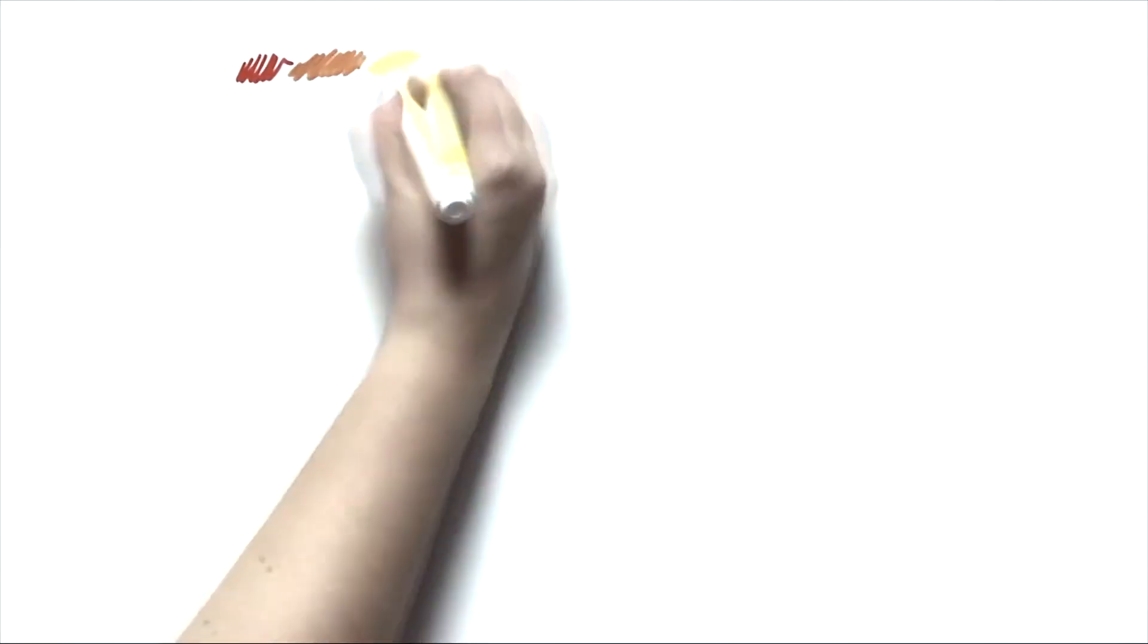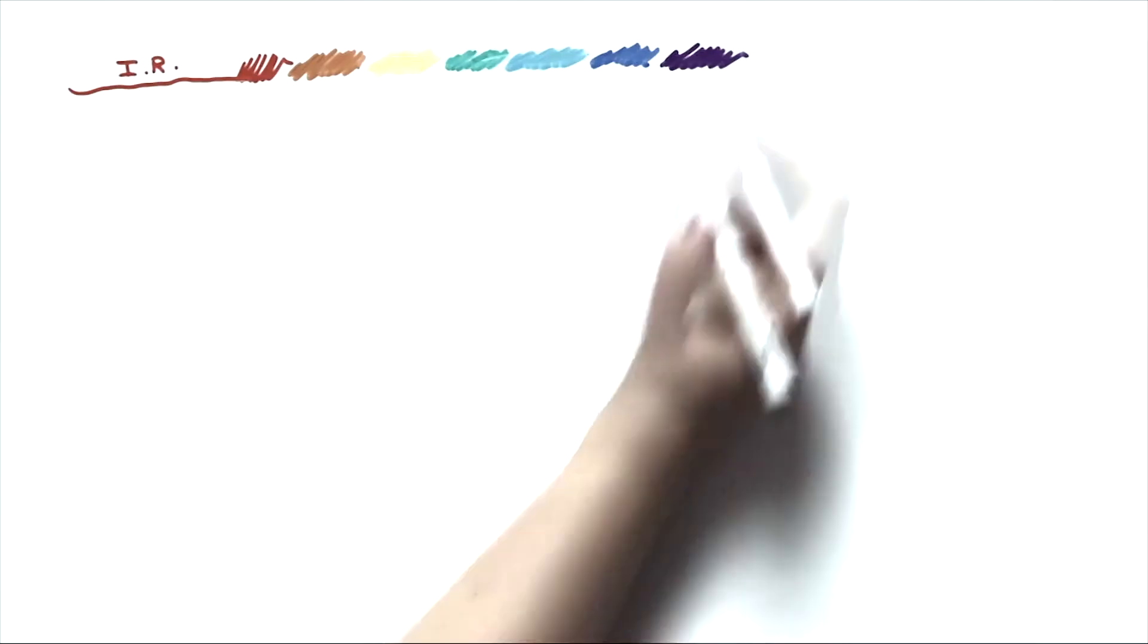Well, you tanned. But how does it work? Sunlight is composed of infrared light, visible light and ultraviolet light.